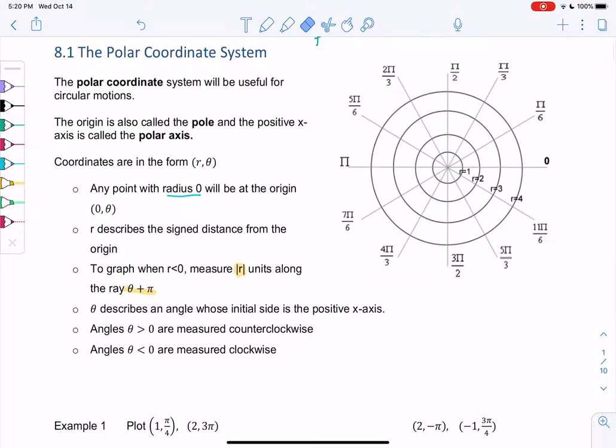Theta is nice because it's the same as the unit circle. We start at the x-axis and go counterclockwise for positive, clockwise for negative, just like the unit circle. Let's plot some points.